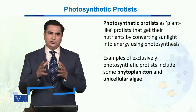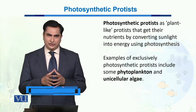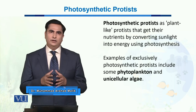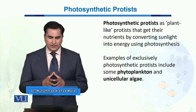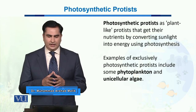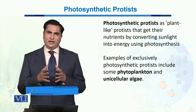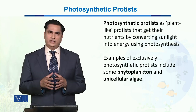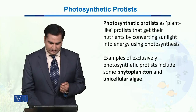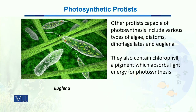Sunlight is used as an energy source in order to synthesize food for these protists. Examples of the photosynthetic protists include phytoplanktons and unicellular algae including chlamydomonas. Other protists capable of photosynthesis include different types of algae, diatoms, dinoflagellates, and euglena.